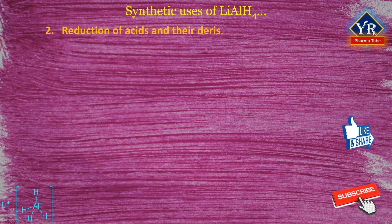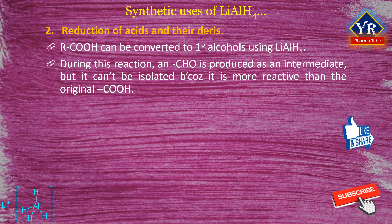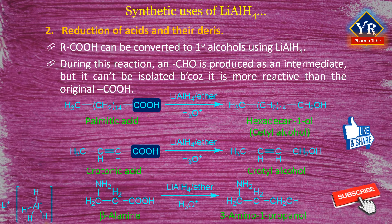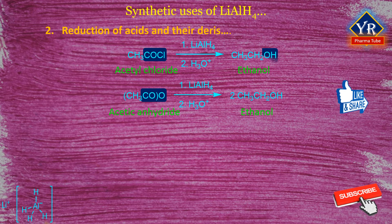Number 2: Reduction of acids and their derivatives. Carboxylic acids can be converted to primary alcohols using lithium aluminium hydride. During this reaction, an aldehyde is produced as an intermediate but it cannot be isolated because it is more reactive than the original carboxylic acid. For example, palmitic acid, crotonic acid, and beta-alanine are carboxylic acids converted to the corresponding alcohols. Partial reduction of acid chlorides and acid anhydrides gives corresponding aldehyde intermediates; however, since aldehyde reduces all the way to the primary alcohol with lithium aluminium hydride, both acetyl chloride and acetic anhydride form ethanol.